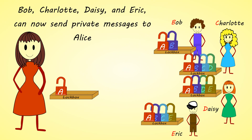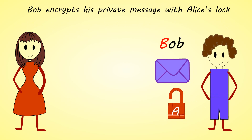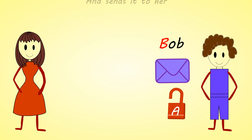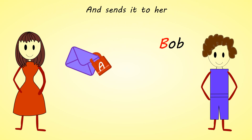Bob, Charlotte, Daisy, and Eric can now send private messages to Alice. Bob encrypts his private message with Alice's lock and sends it to her.